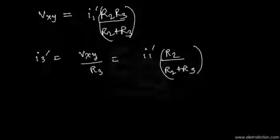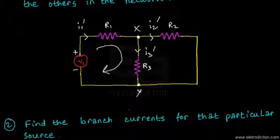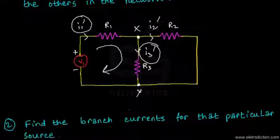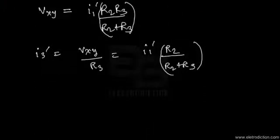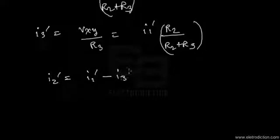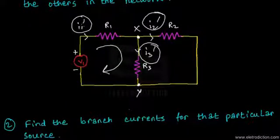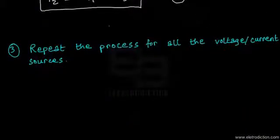Now that we have I1' and I3', we can find I2'. Since the current I1' splits into I2' and I3' at node X, we get I2' = I1' − I3'. This gives us Equation 1 relating the branch currents when only source V1 is active.